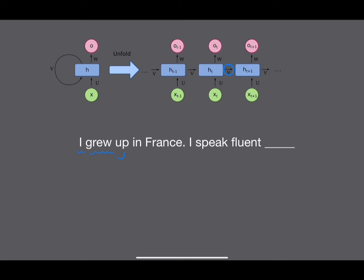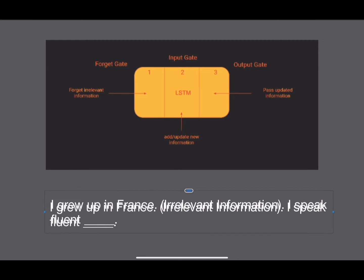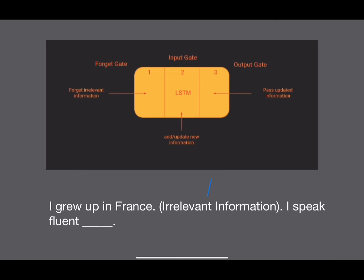When we pass in 'grew', the model factors in both 'I' and 'grew' to make its prediction for the next word. The fundamental idea is that the model can factor in previous information to make a future prediction — words from far in the past, rather than only the previous word. If there's a bunch of irrelevant information between two relevant parts, the model needs to remember information from far in the past.